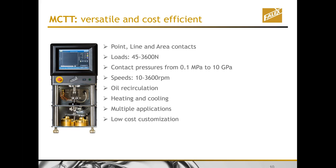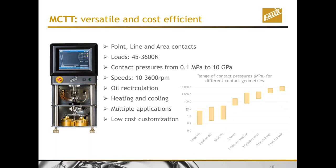This tester is the best value for precise, accurate tribology testing. It can test in point, line, and area contacts. It has a wide load range from 45 to 3,600 Newtons, contact pressures from 0.1 megapascals to 10 gigapascals across different adapters, speeds from 10 to 3,600 RPM, oil recirculation, heating and cooling options, multiple applications, and low-cost customization.